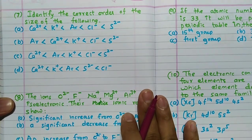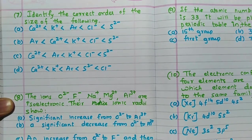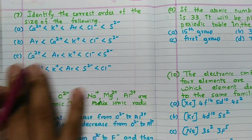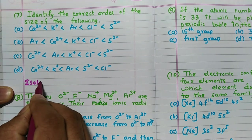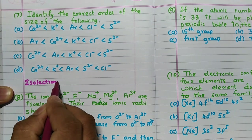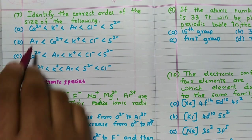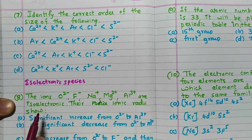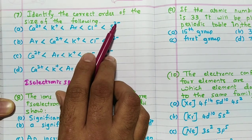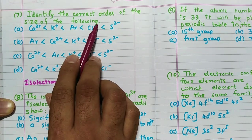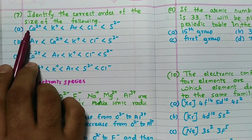Question seven: identify the correct order with respect to size of the following species. All these are isoelectronic species — they have the same number of electrons. All are 18-electron systems: S²⁻ has atomic number 16 plus 2 = 18; Cl⁻ has 17 plus 1 = 18; Ar has 18; K⁺ has 19 minus 1 = 18; Ca²⁺ has 20 minus 2 = 18.